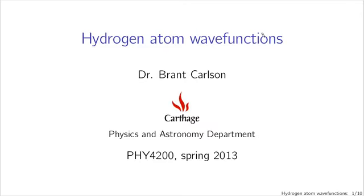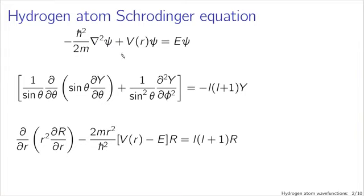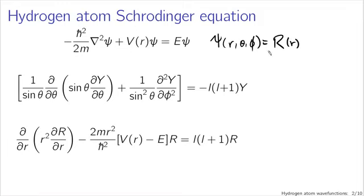We now have a complete description of the hydrogen atom wave functions. Our starting point was the time-independent Schrödinger equation expressed in three dimensions with a Laplacian of the wave function as part of the kinetic energy term. Applying our usual separation of variables to psi of r, theta, and phi, using spherical coordinates since our potential in the case of the hydrogen atom is a function only of radius, we're separating a radial equation from an angular equation.